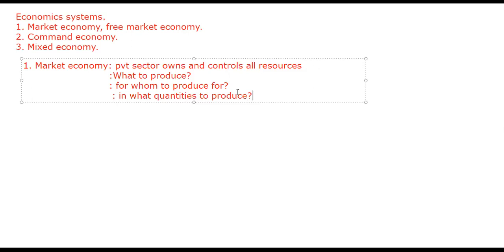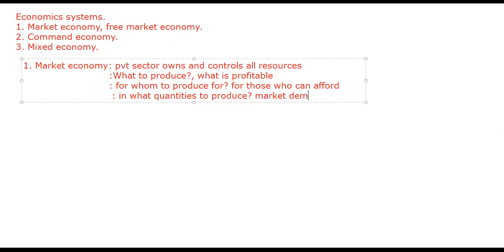The market economy answers 'what to produce' by producing only what is profitable. Just like a private individual, if something becomes unprofitable, they switch resources to produce something profitable. For 'whom to produce,' they produce for those who can afford it. For 'in what quantities,' they produce what the market demands.